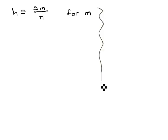So before we solve this problem, h equals 2m over n for m, let's solve a similar problem, 5 equals 2x over 7, solving for x.